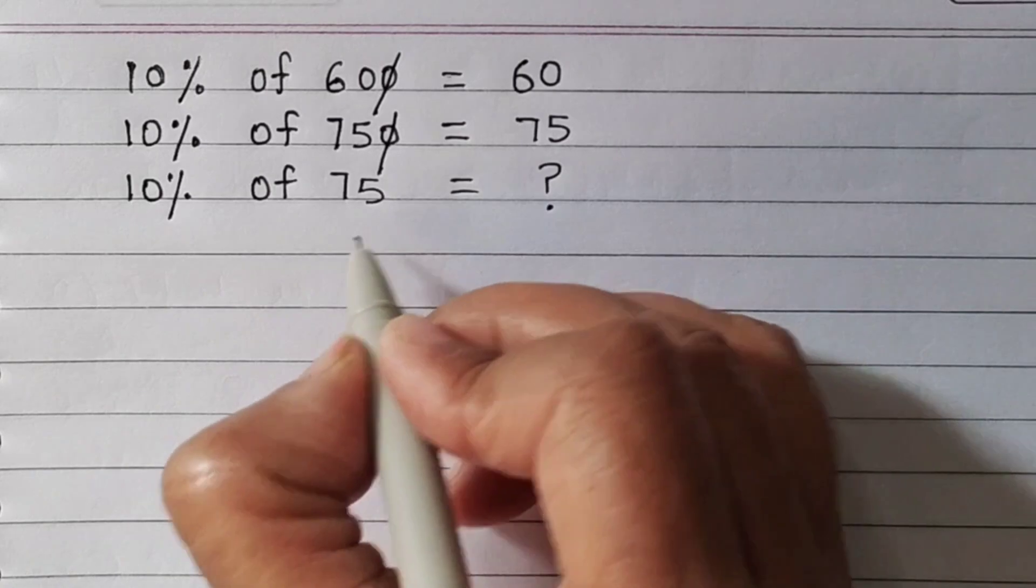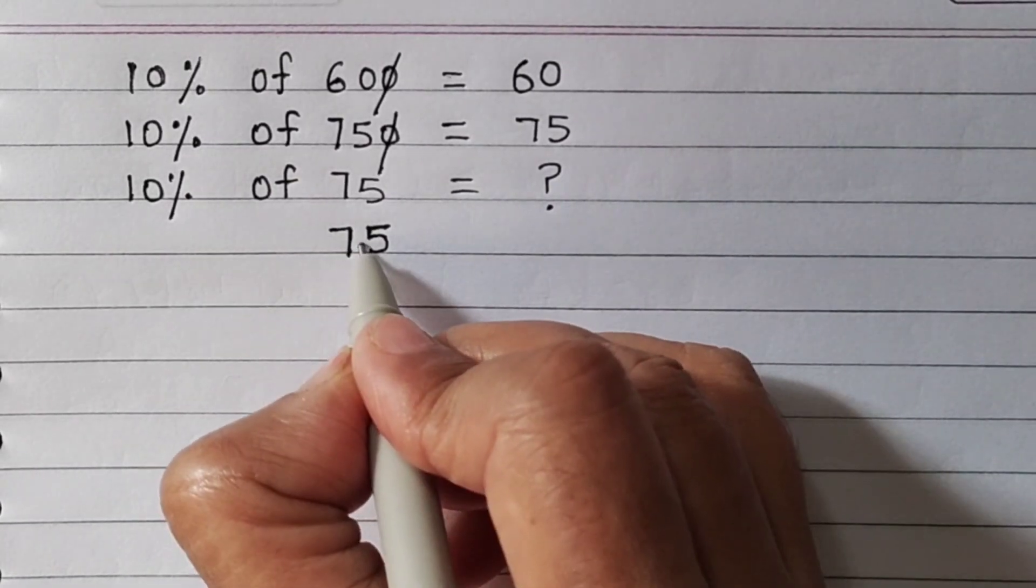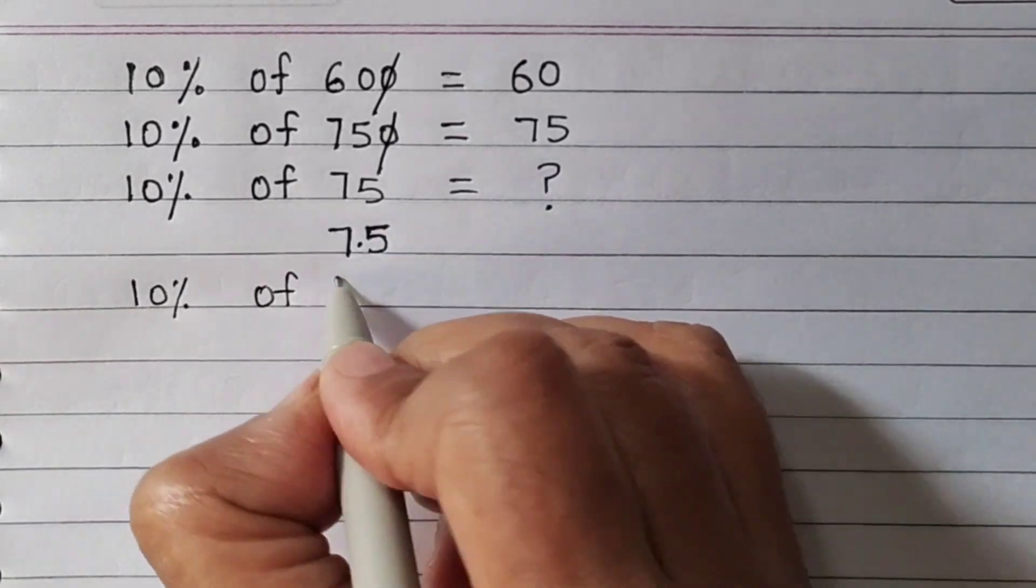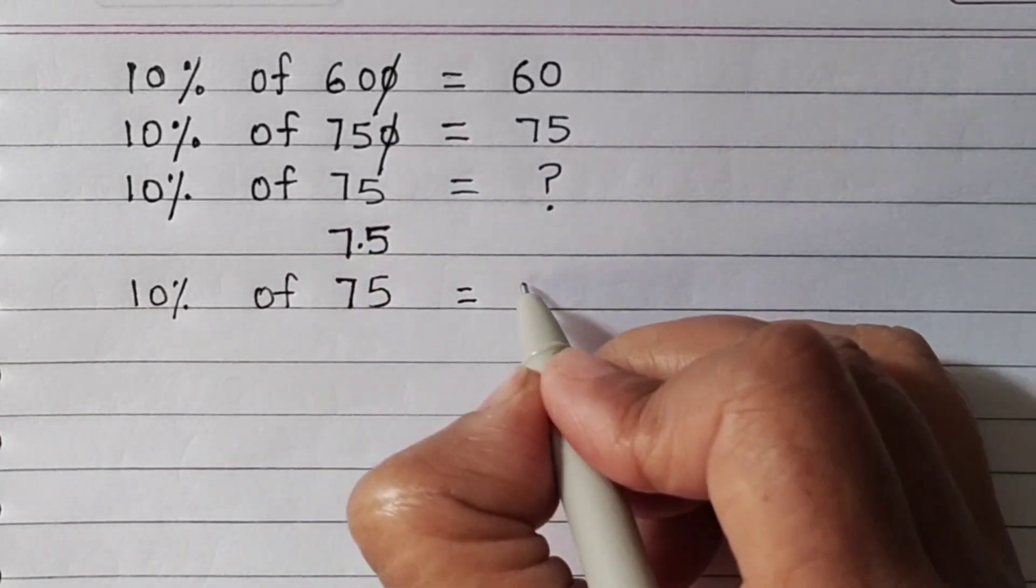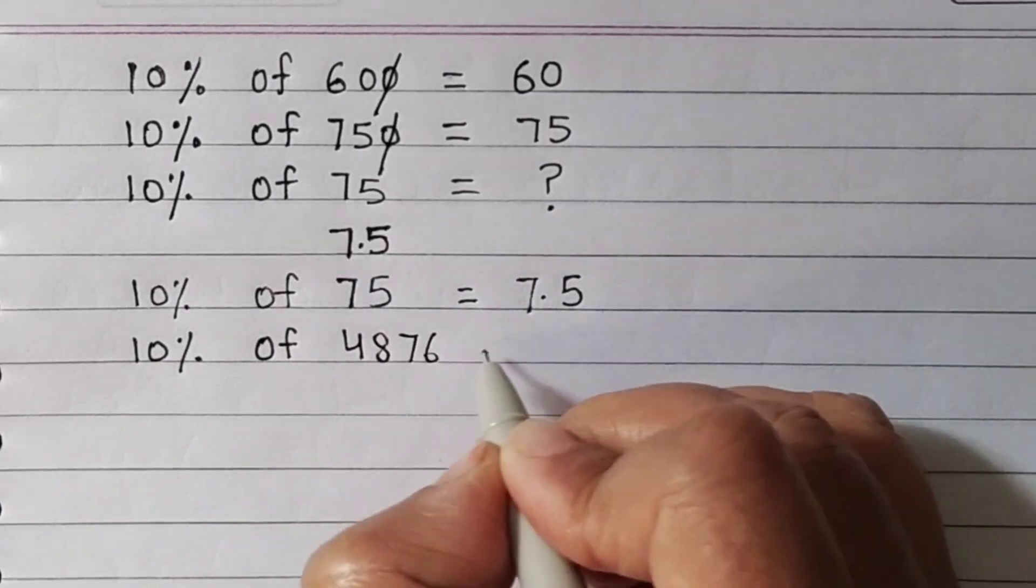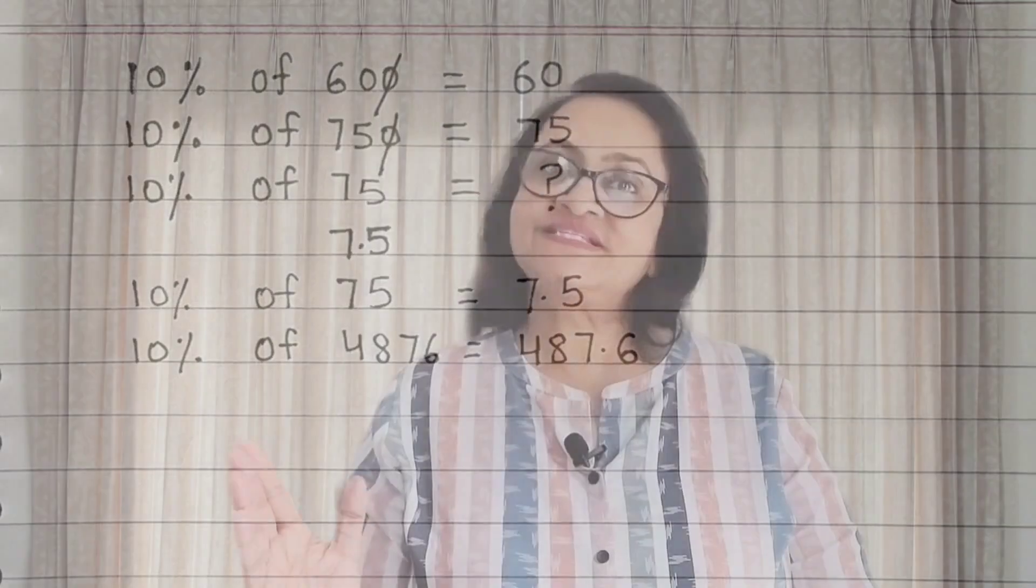So what can we do? Just place a decimal before the last digit. Last digit se pehle, sirf decimal lagana hai. And your answer is 7.5. 10% of 4876 is 487.6. Last digit se pehle, decimal.